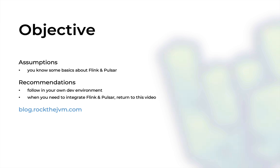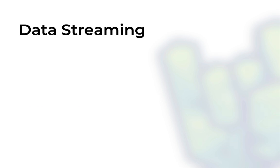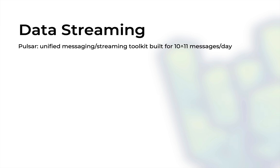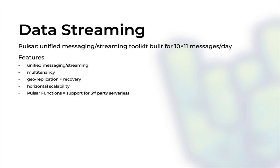Let me spend exactly one minute talking about why we're using Pulsar and Flink. Pulsar is a newer piece of tech which is a competitor to Apache Kafka, offering unified messaging and streaming for 10 to the 11th messages per day — a ginormous amount of data flowing through Pulsar in almost real time. Some features include a unified messaging and streaming pipeline, where you can build messaging in the style of Kafka with topics and also do powerful data streaming.